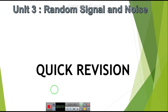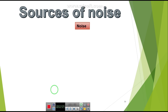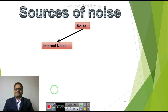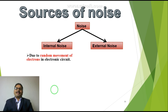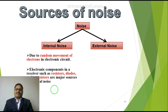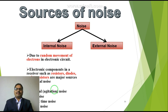After that we studied the properties of the Gaussian process. Later we studied what noise is — there is internal noise and external noise. Internal noise is the random movement of electrons in electronic circuits such as resistors, diodes, and transistors. We covered each type of noise: thermal noise, shot noise, flicker noise, and transit noise.